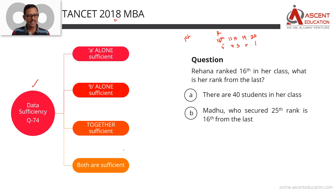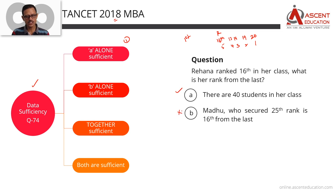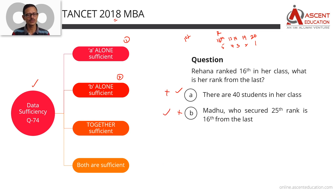Let's look at the answer options for this Data Sufficiency question. Answer option 1: if Statement A alone is sufficient. Answer option 2: if Statement B alone is sufficient and A is not sufficient. Answer option 3: if together the statements are sufficient.